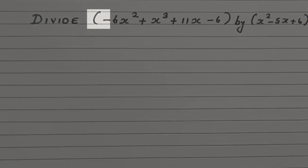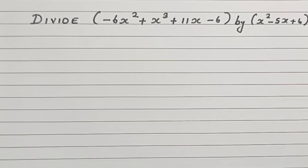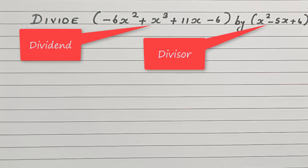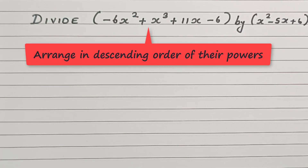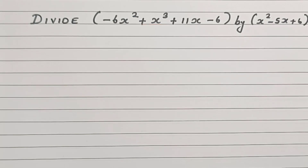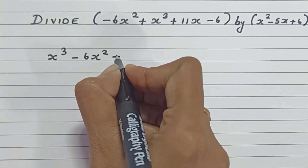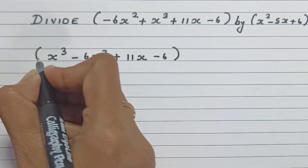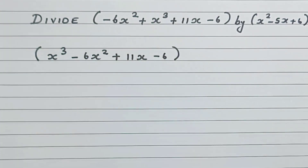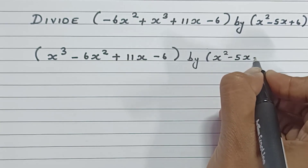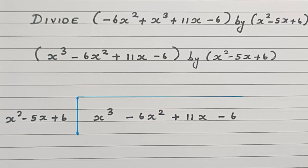Divide minus 6x squared plus x cubed plus 11x minus 6 by x squared minus 5x plus 6. Here minus 6x squared plus x cubed plus 11x minus 6 is our dividend, and x squared minus 5x plus 6 is our divisor. The very first step: arrange the dividend in descending order of powers. The highest power is 3, that is x cubed. On rearranging, we have x cubed minus 6x squared plus 11x minus 6, arranged in descending order. Now divide by the divisor x squared minus 5x plus 6.